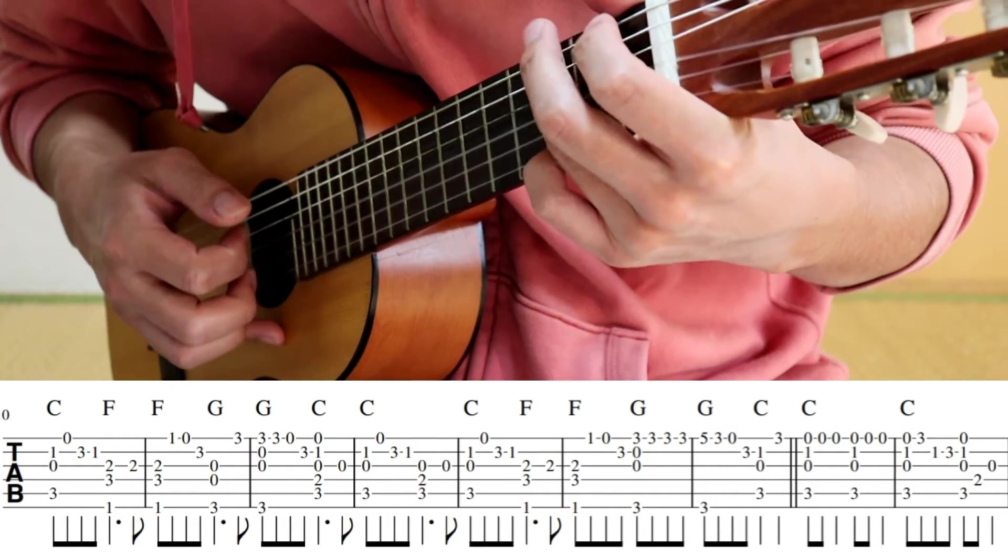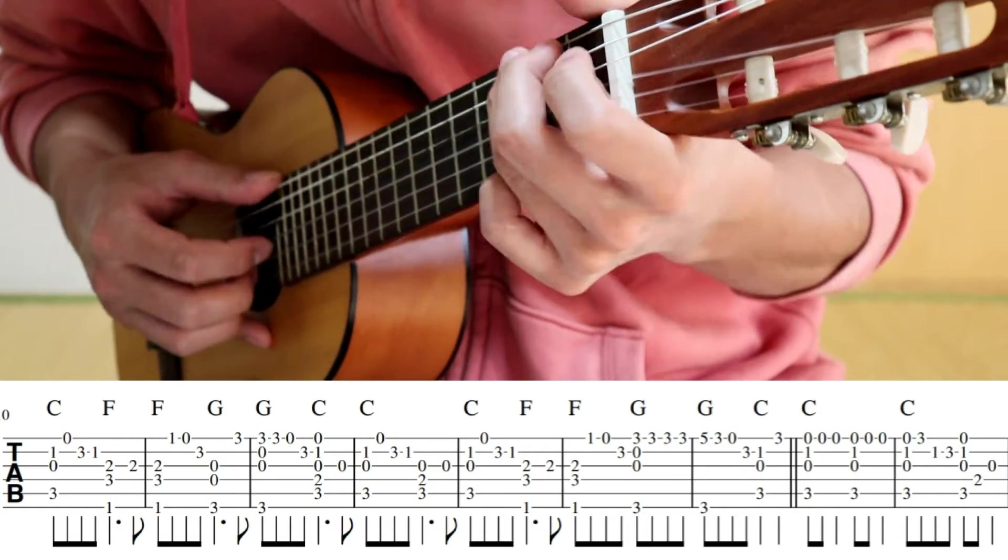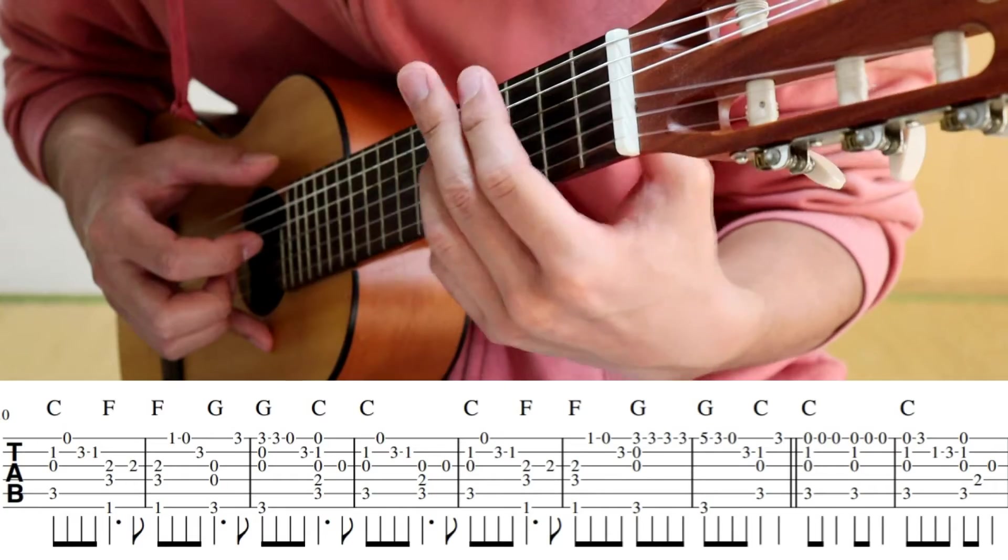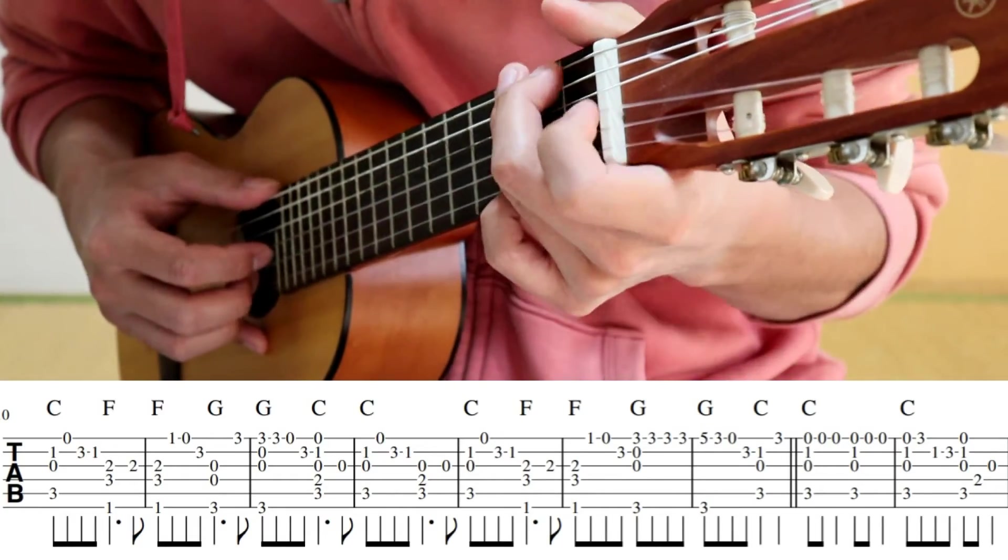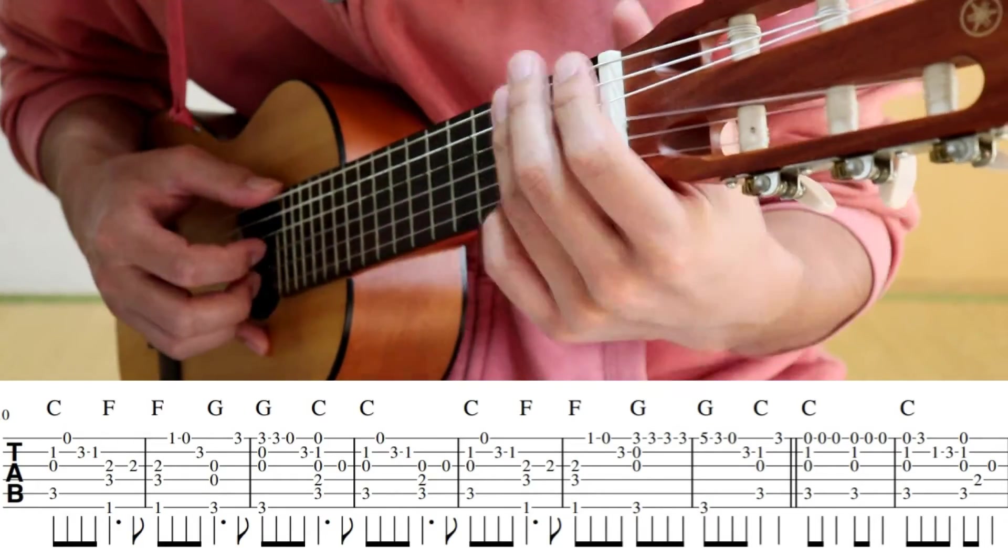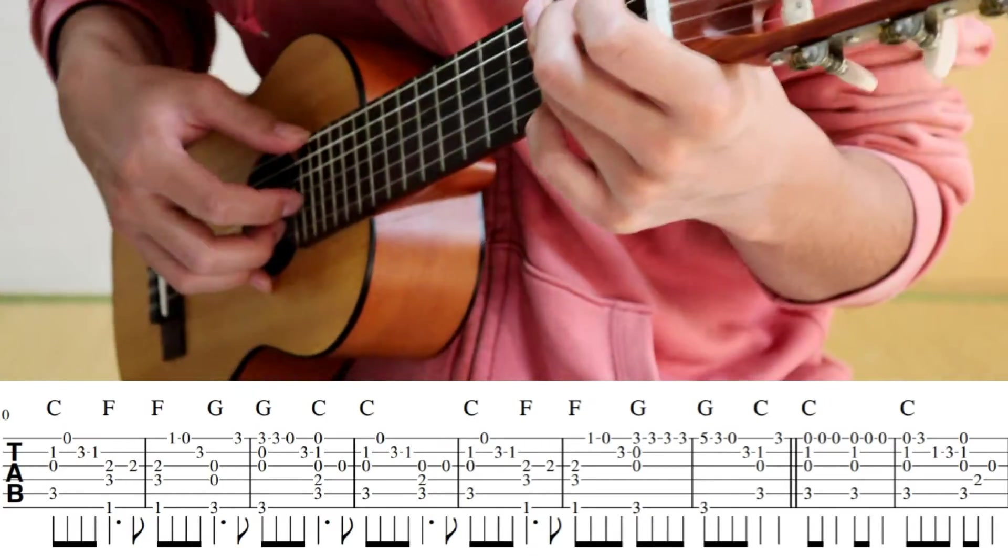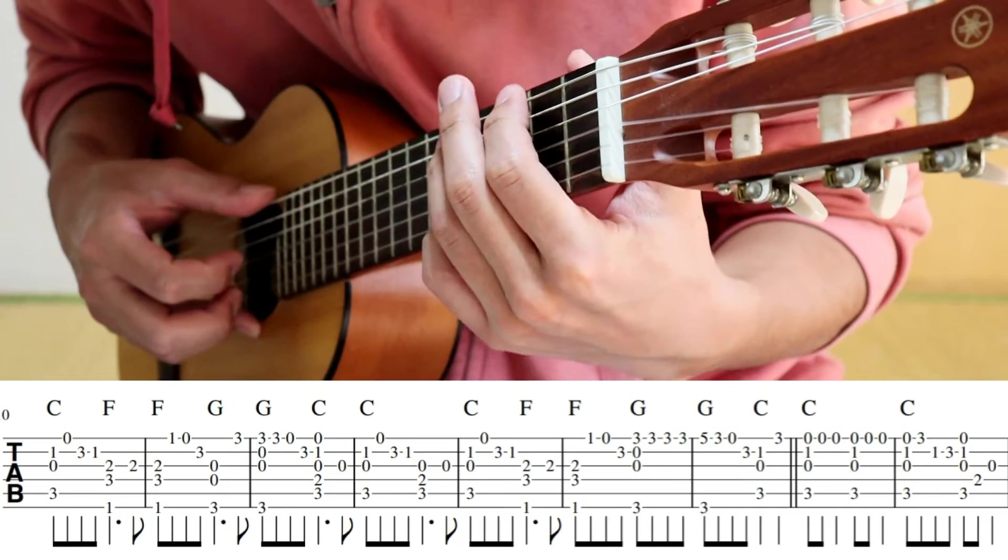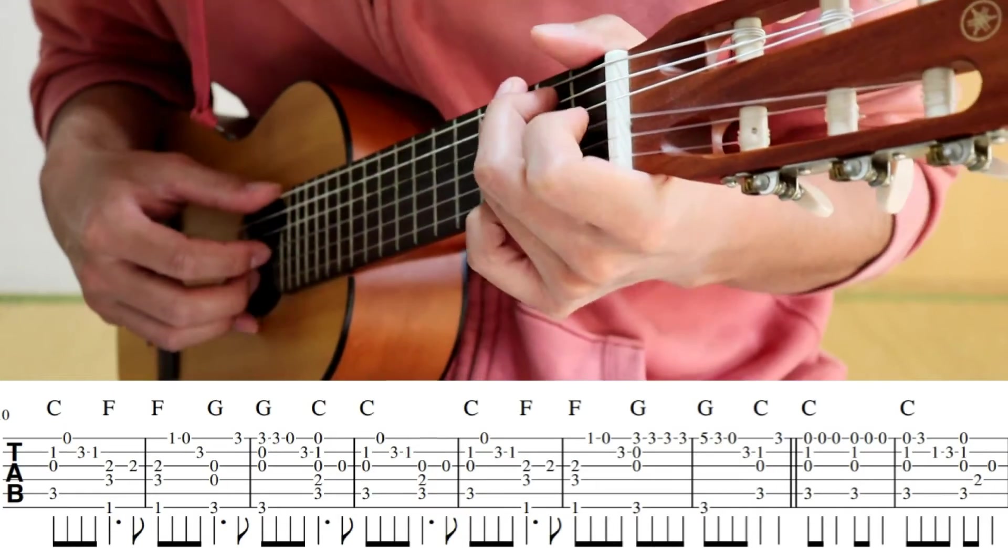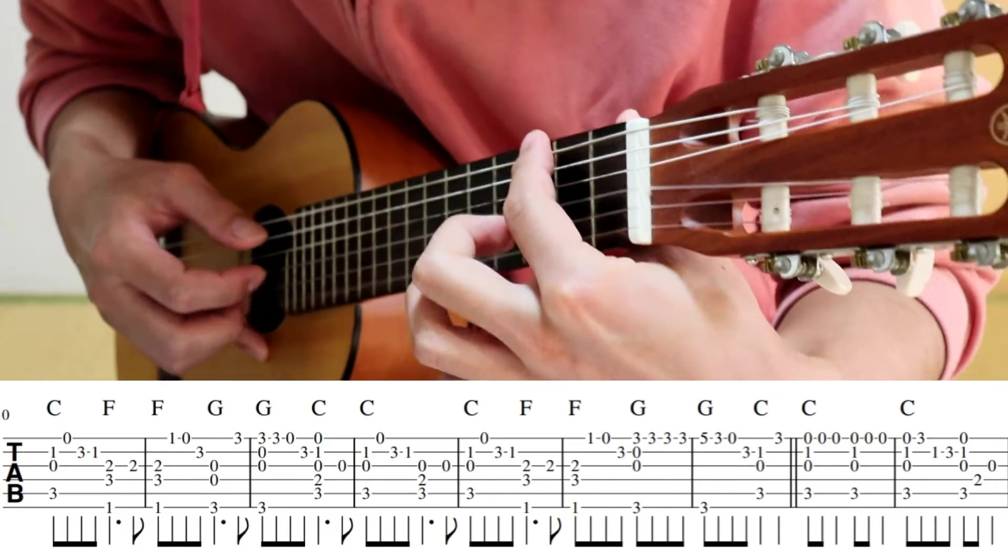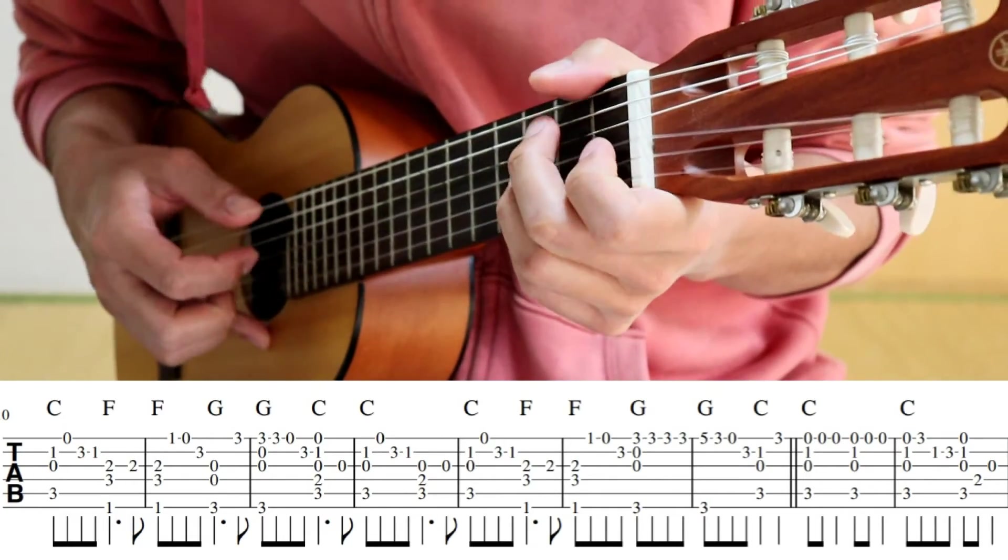この小指、1弦の3フレットを押さえている小指をそのまま5フレットに動かしていきます。そうすると人差し指がちょっとグイッとこっちまで行きますね。その人差し指を今度6弦の3フレットに。だから手の動きというか手の形はあまり動かないんですよ。ウーっとかいう風にならないんです。ただこうスッと動かして人差し指もシュッと動かしてあげるというイメージでね。